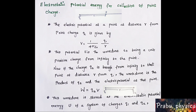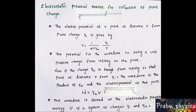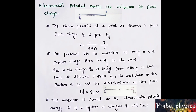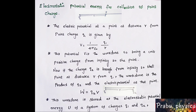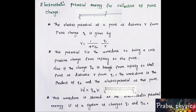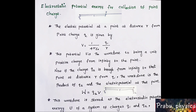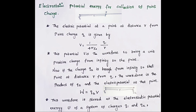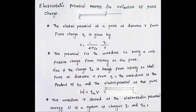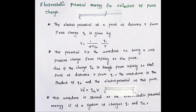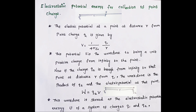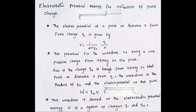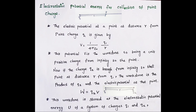This potential V is the work done to bring a unit positive charge from infinity to the point. That is, bringing a positive charge — the work done is the product of q2 and the electric potential at the point.